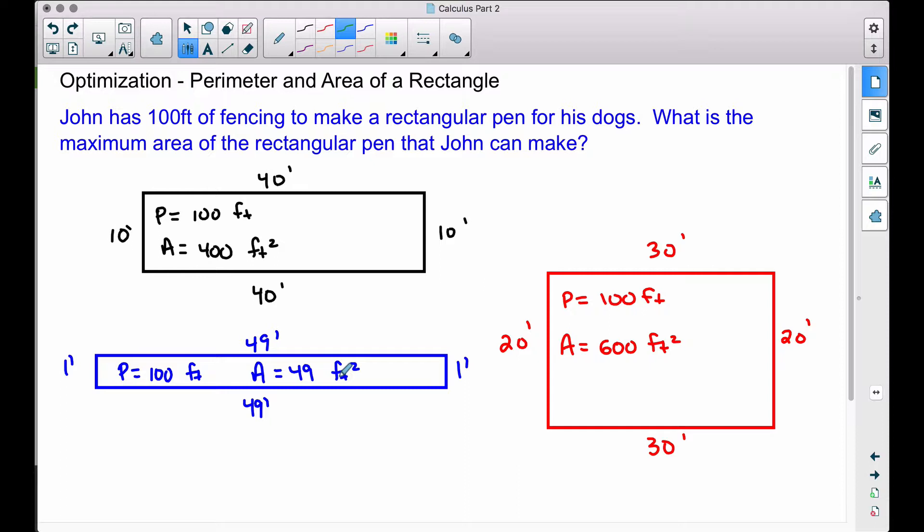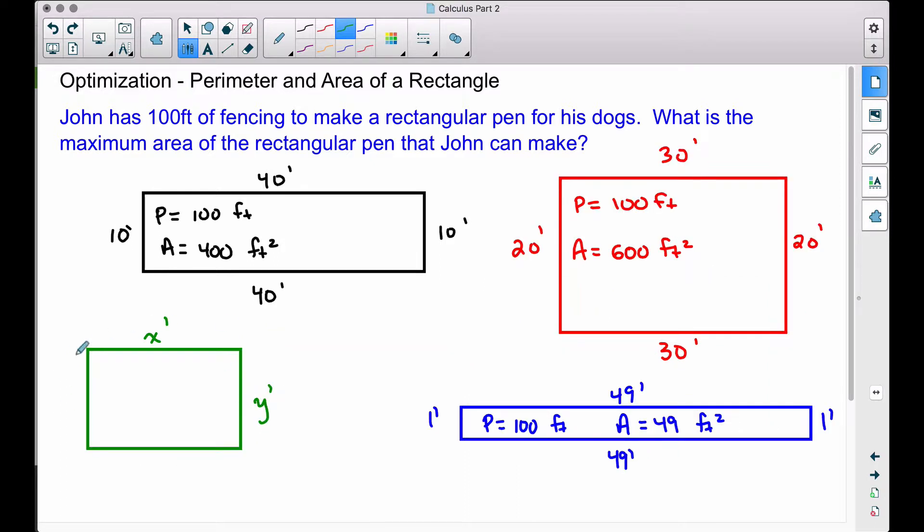But I want to show you how to do that using calculus. So I have a generic rectangle drawn here such that its length is x feet and its width is y feet. The perimeter of this rectangle will be 2x plus 2y. Maybe you are familiar with 2 times the length plus 2 times the width. We're just taking 2x's plus 2y's.